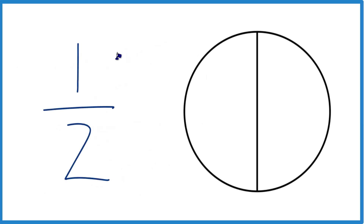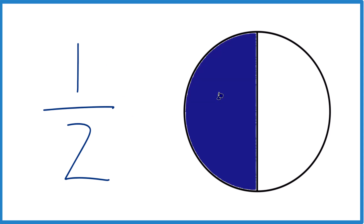So if you have 1 half, that means you took one thing — our whole circle — divided into two pieces. And one part out of the two, that's our 1 half. So that kind of makes sense. That's something we're familiar with.